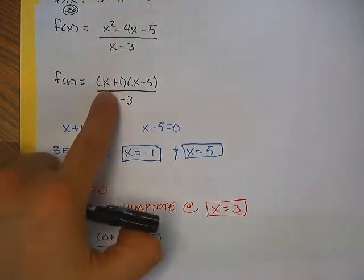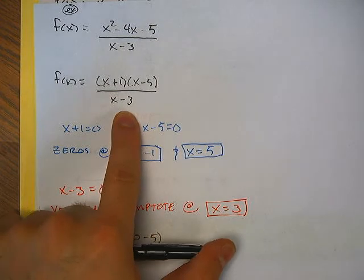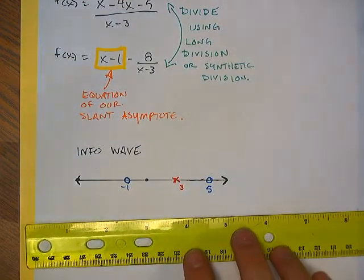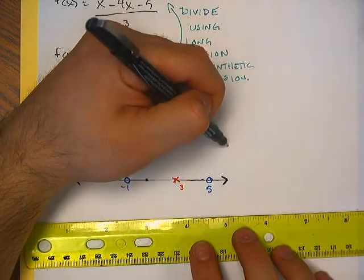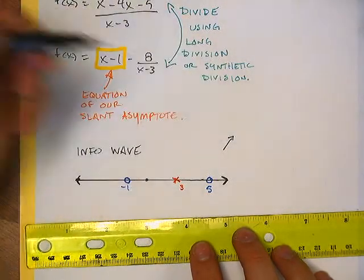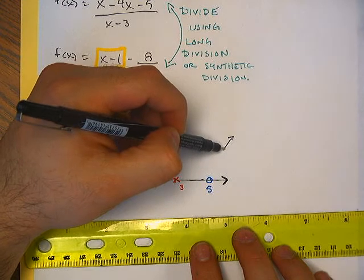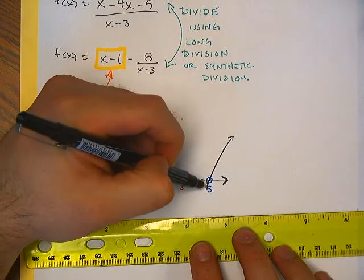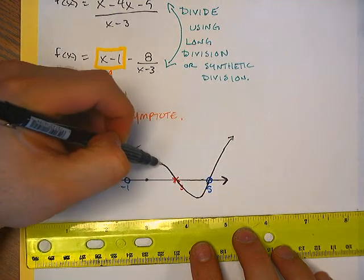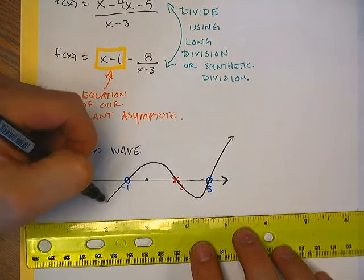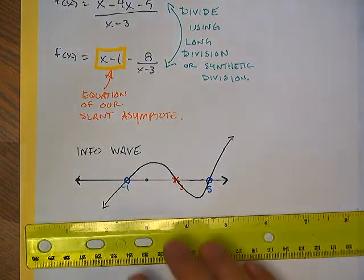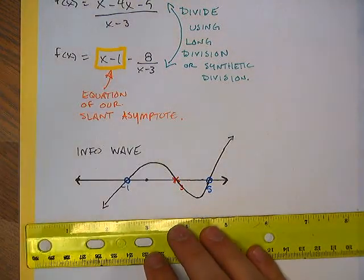Since there's no multiplicity — none of these factors are squared — we're just going to cross through all of them. We always start up at the top right-hand corner for our information wave, and we go through every point of interest. So the wave goes through negative 1, comes back up, then goes back down through 3 and through 5, telling me where my function is positive and where it's negative.